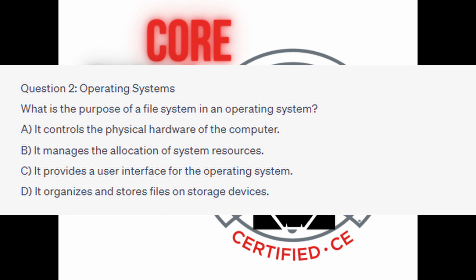And for the next question of our exam, question number 2. What is the purpose of a file system in an operating system? Is it A: it controls the physical hardware of the computer? Is it B: it manages the allocation of system resources? Is it C: it provides a user interface for the operating system? Or is it D: it organizes and stores files on storage devices?